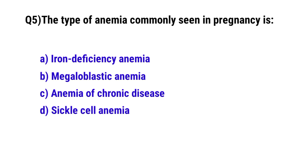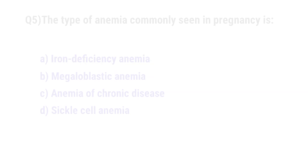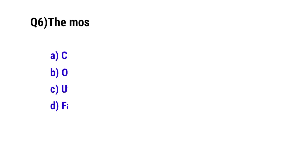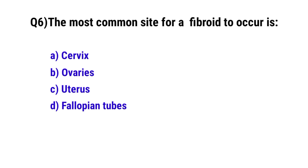Question number five: The type of anemia commonly seen in pregnancy. The correct option is A, iron deficiency anemia.